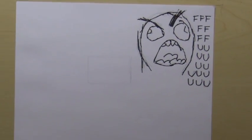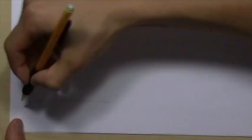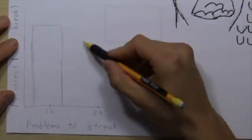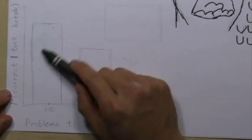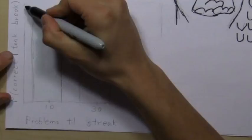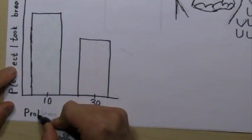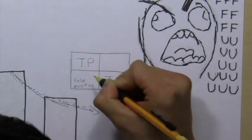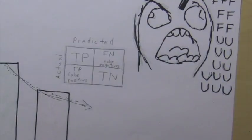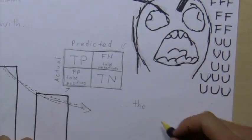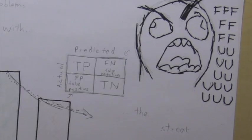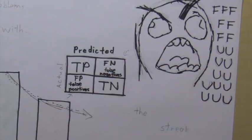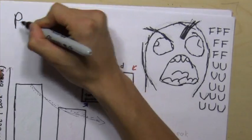This was not the only problem at Khan Academy. Our data showed that those who took 30 problems to get a streak performed much worse after a break than those who got a streak in 10. Those are two classification errors: requiring some users to do too many problems while letting through some users who may need more practice.